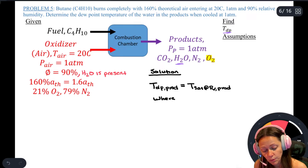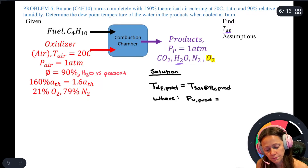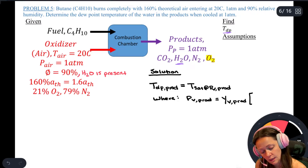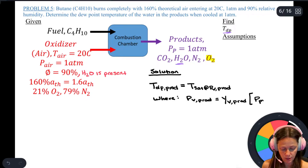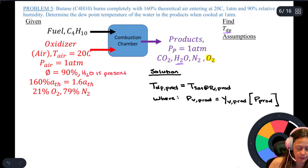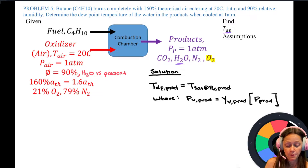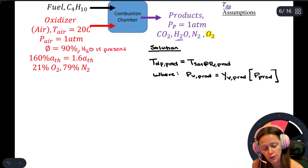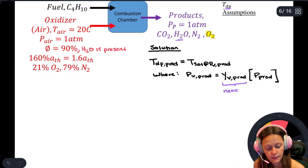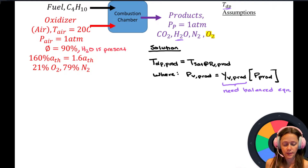The dew point temperature of the water in the products is going to be T_sat at p_v of the water in the products. We can relate p_v to the mole fraction of water in the products times the pressure of the products, which is one atm. To find that mole fraction, I need the balanced equation first.